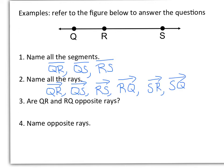Number 3, are QR and RQ opposite rays? Well remember we said that the first letter of the ray is the endpoint. So QR we're saying we start at point Q and we're going to the left. Then RQ we're saying we start with point R and go to the right. So are these opposite rays? The answer would be no because they have different endpoints.